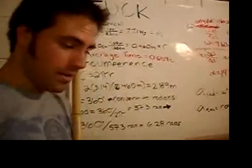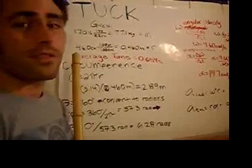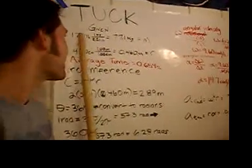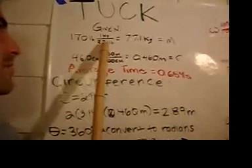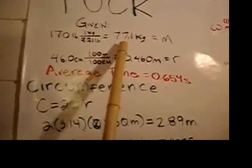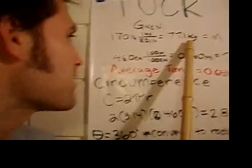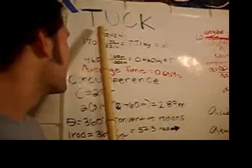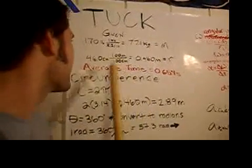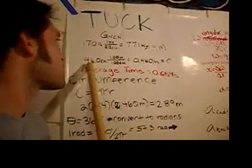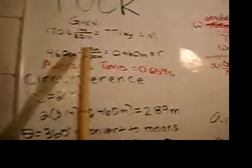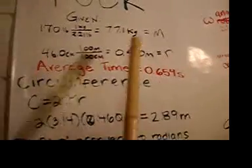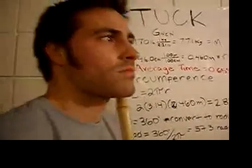So now I weighed myself on the scale and I found that I weighed 170 pounds. So I used my conversion and I found that my mass is 77.1 kilograms. And Brittany had just measured my radius in the tuck formation and we found that I was 46 centimeters all tucked up. So using the conversion, I am 0.46 meters in radius in the tuck.